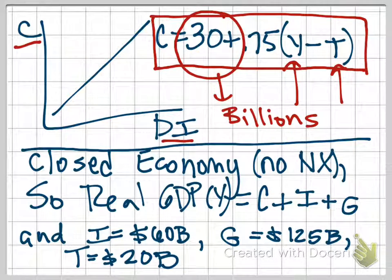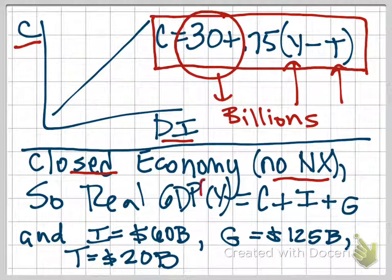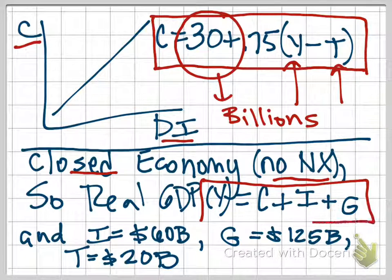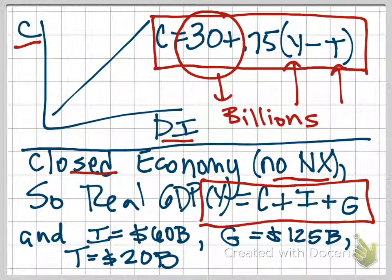Next, we're told that this is a closed economy, and what that means is there's no international trade, no imports, no exports. Because of that, because there's no imports or exports, no net exports, then our equation for real GDP, again designated as Y, is simply consumption plus investment plus government purchases. This is our GDP equation from an earlier chapter; there's just no net exports tagged on to the end.